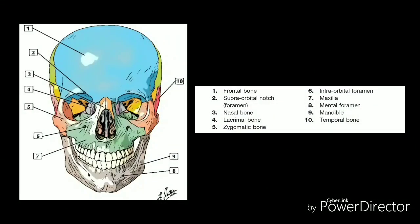For the facial bones, the viscerocranium or face includes these bones: vomer, two inferior nasal conchae, two nasals, maxilla, mandible, palatine, two zygomatics, and two lacrimals. The viscerocranium, or facial skeleton, supports the soft tissue of the face and consists of 14 individual bones that fuse together. However, the hyoid bone, ethmoid bone, and sphenoid bones are sometimes included in the viscerocranium.